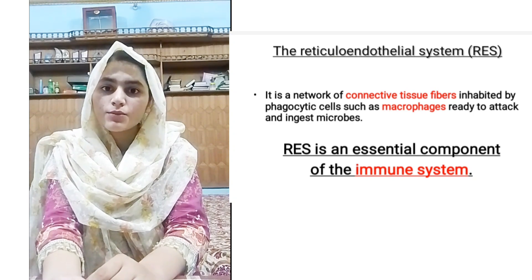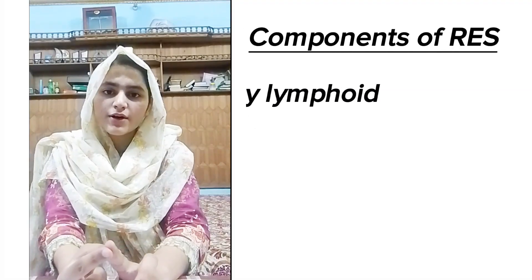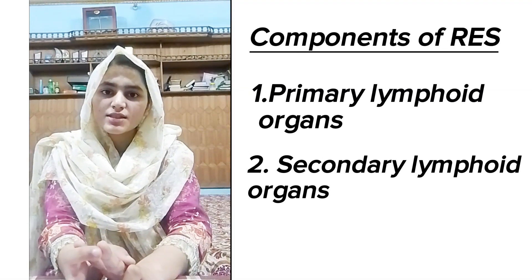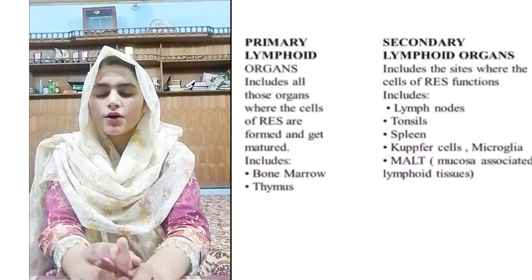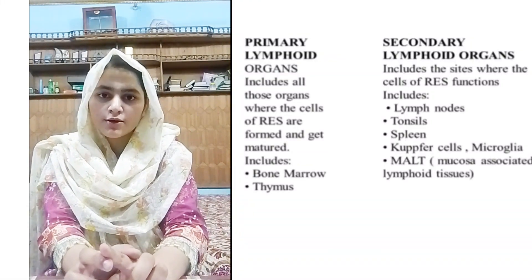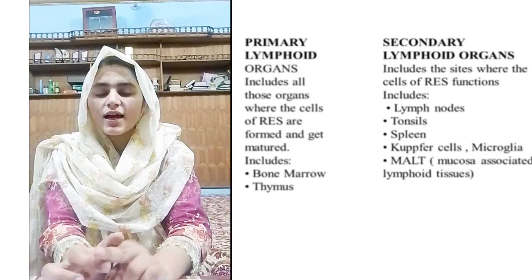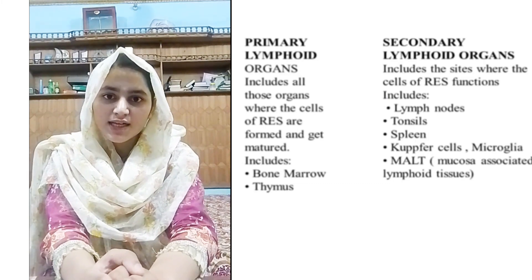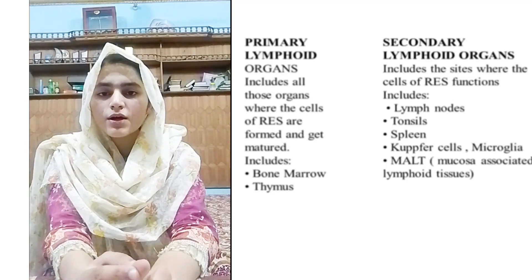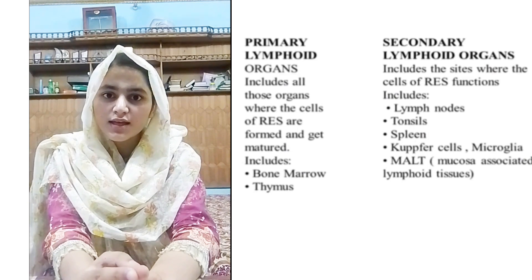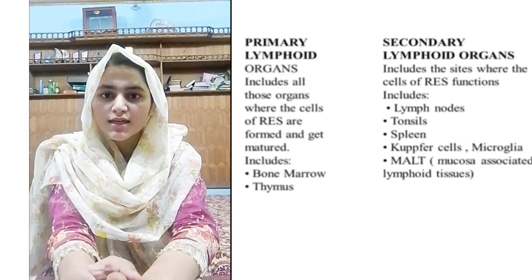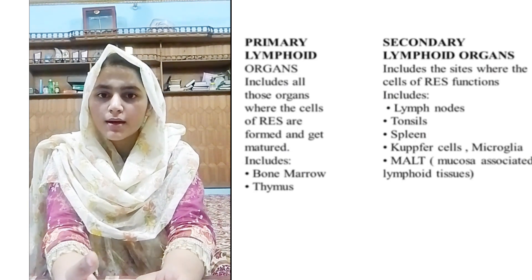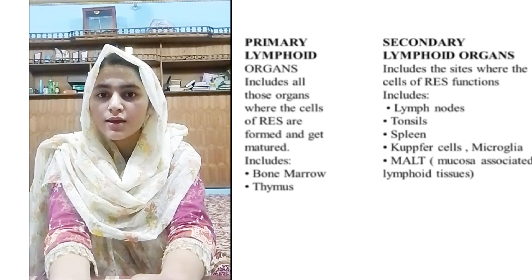This is a very important component of the immunity system. Two types of organs are present in it: primary lymphatic organs and secondary lymphatic organs. Primary lymphoid organs are the organs in which the formation of endothelial cells takes place, and secondary lymphoid organs are the organs in which the function of endothelial cells takes place. The primary lymphoid organs include the thymus and bone marrow.